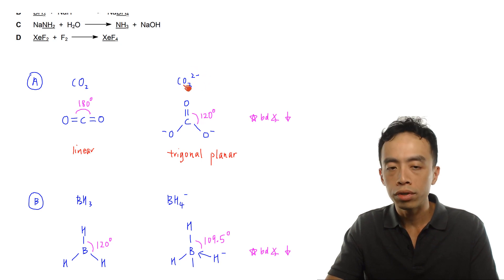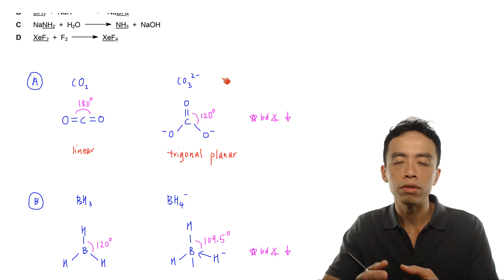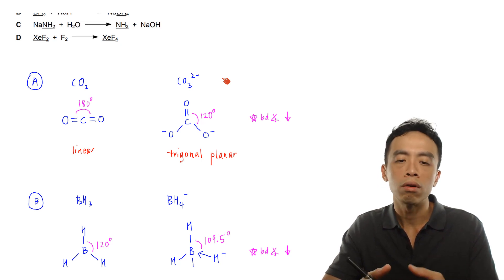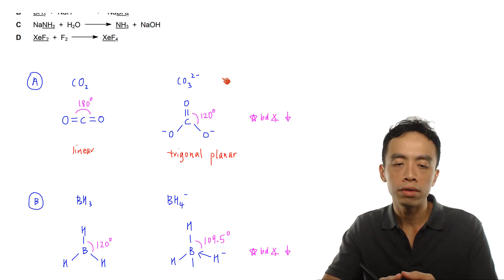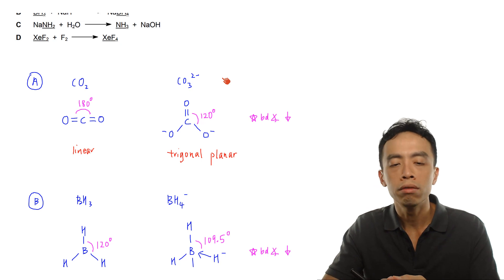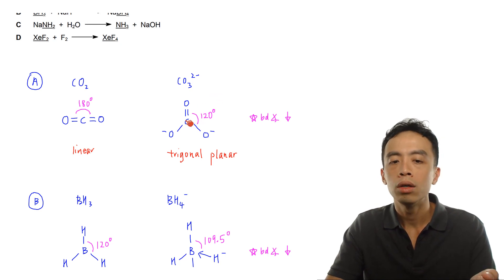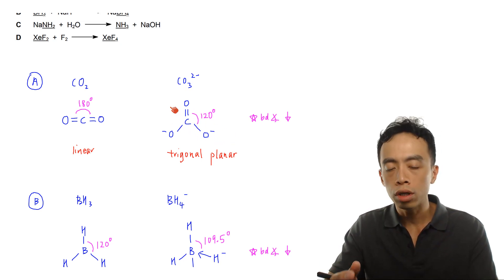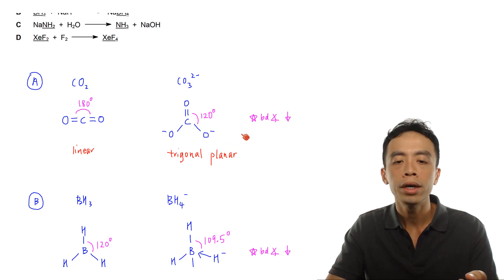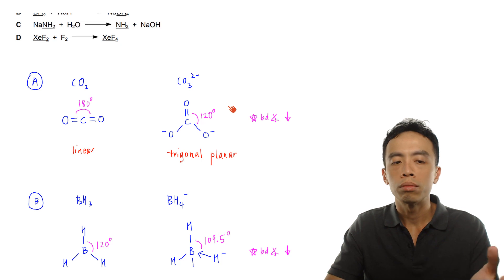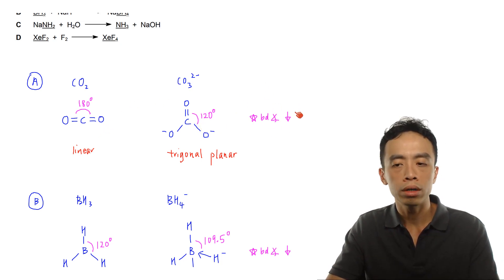For carbonate, CO3 2−, the carbon will have one double bond oxygen and two single bonds with O−. Considering the shape with respect to carbon, this is three bond pair and no lone pair, so the shape is trigonal planar and the bond angle is 120 degrees. From the reactant CO2 to the product CO3 2−, there is a decrease in the bond angle, so this is not what we want. The question wants an instance where there is an increase in the bond angle.